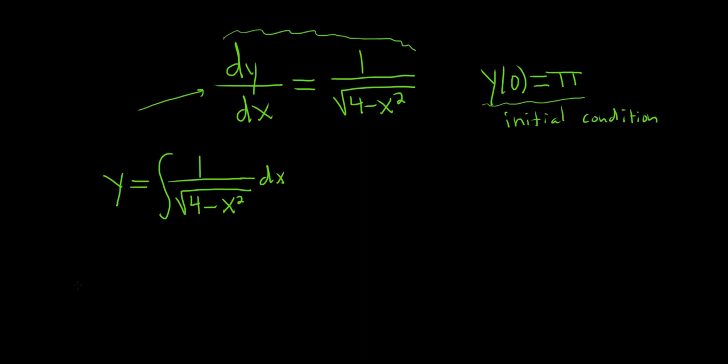So there is a formula that we can use. It tells us that if you have 1 over the square root of a squared minus x squared dx, this is equal to the arc sine of x over a plus our constant, capital C.